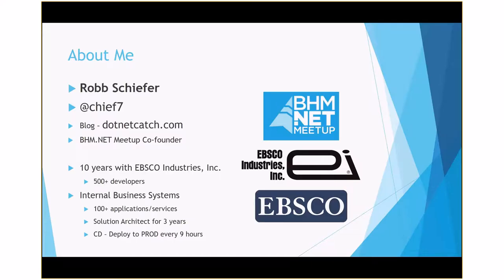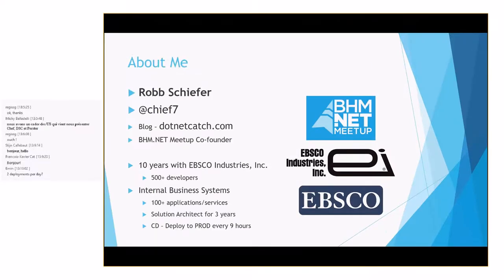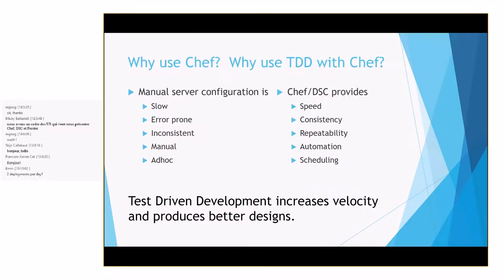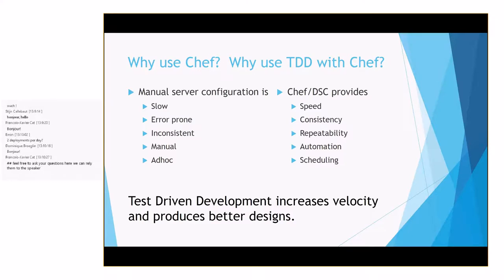One of the ways we've increased deployment frequency is to automate as much as we can. Today's talk is about automating your infrastructure configuration, which we do with a product called Chef. The alternative has been manual server configuration, and there are a lot of problems with that: it's slow, it's error-prone because a human is doing it, someone might fat-finger something, steps may be performed in slightly different orders or forgotten, making it inconsistent, and it requires someone's time.